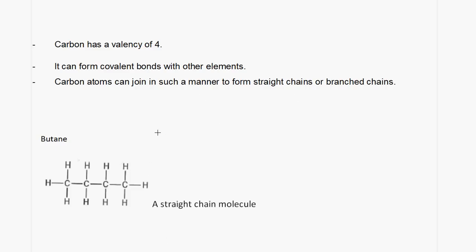So for example, this is a straight chain molecule. We have butane. We have four carbon atoms joined together in a straight chain.